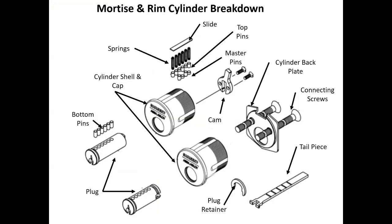Here's an exploded view of the mortise and rim cylinder. Again, you have your plug or barrel on the left-hand side, your body — sometimes called a cylinder shell and cap. Of course, your pins and springs, your cam, or in the case of a rim cylinder, connecting screws in the tailpiece, which is always horizontal.